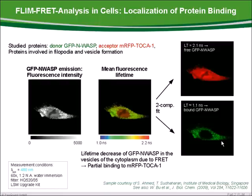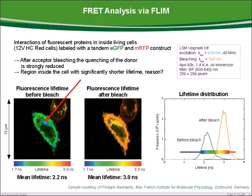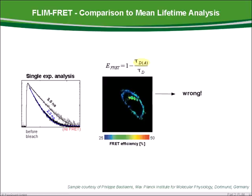We can also calculate the FRET efficiency of the bound FRET molecules to be around 50%. Here we have another FRET example. The group of Philipp Bastions expressed a tandem EGFP and RFP FRET construct in living cells. The acceptor bleaching experiment shows that the donor lifetime is decreased due to FRET. In the donor FLIM image, we find a region with strongly reduced lifetime. The lifetime of the donor only is obtained after acceptor bleaching and accounts to 3 nanoseconds. If we calculate the FRET efficiency from the average lifetime, we see a low FRET efficiency of 25% at the cell membrane and a higher efficiency in the central region.